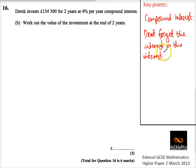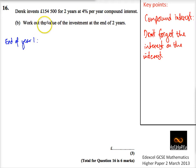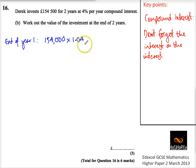Compound interest means that whatever money you've made, the year after that you make money on that too. So at the end of year one, we start with 154,000 — actually 150,000 — and I'm going to times that by 1.04. So that's the increase of 4% on that. Just on my calculator, I'm going to do 150,000 times 1.04.